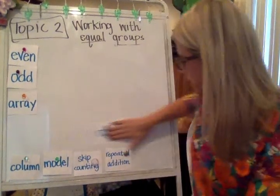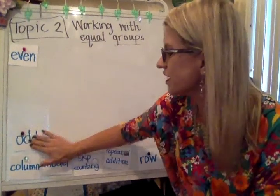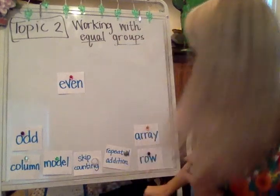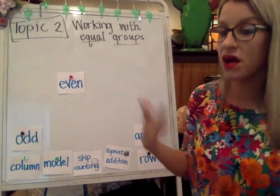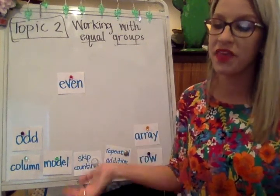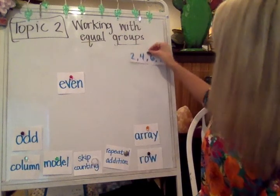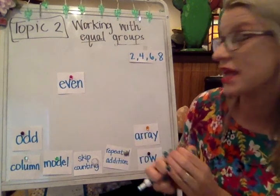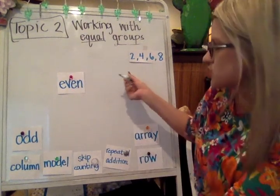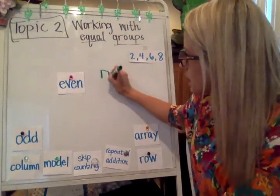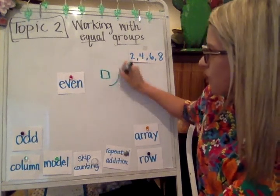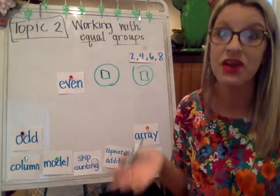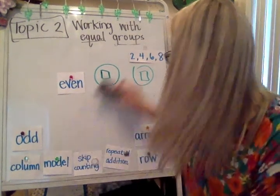We'll start with this first term: even. Even refers to a number that can be shown as two equal groups. These are some examples of even numbers. Even means that it can be shown as two equal groups. So if I had two cubes, I could have one on this plate and one on this plate. Both of them have one — they're equal.